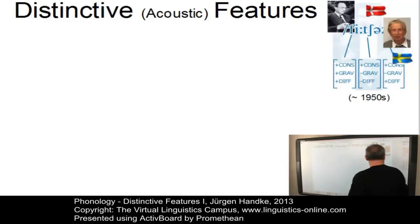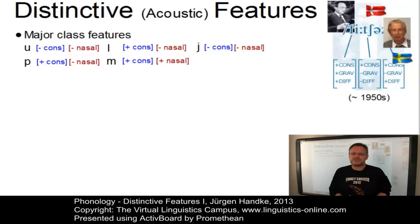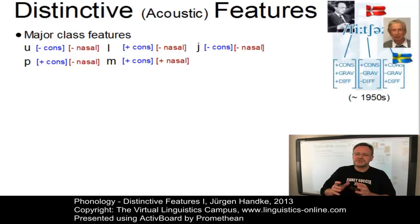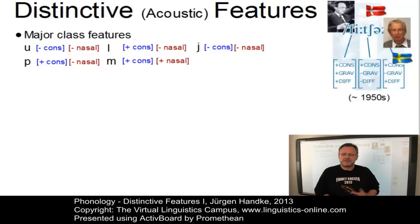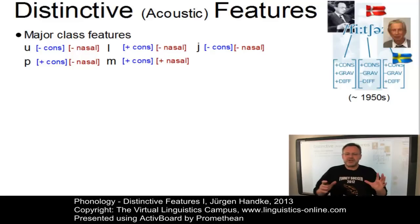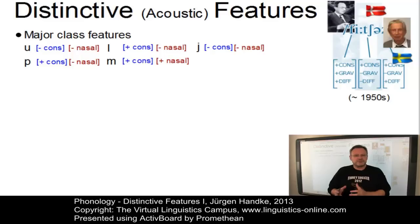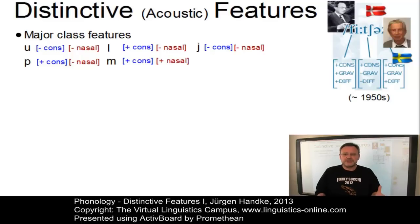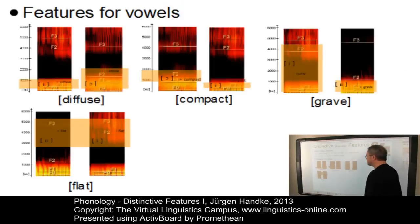The first group of features Jakobson defined are referred to as major class features. They have been introduced to distinguish the major classes of segments: vowels, consonants, and segments somewhat in between — nasals, liquids and glides. However, there is disagreement about the number and type of major class features. Jakobson introduced the features consonantal and nasal, and later further features were added. In Jakobson's approach, all vowels were assigned the major class feature minus-consonantal. To account for the parameters tongue height, tongue position and lip rounding, additional features based on acoustic measurements were introduced.